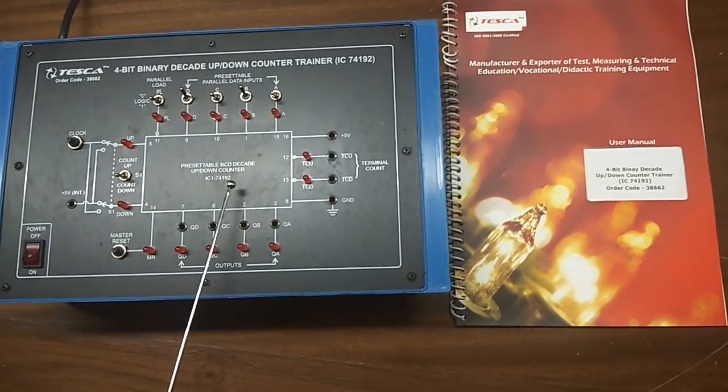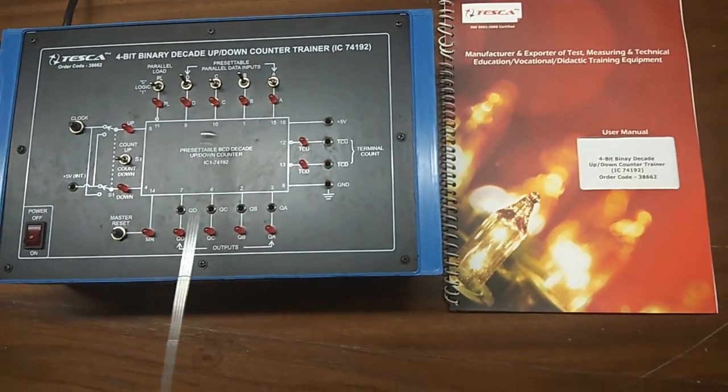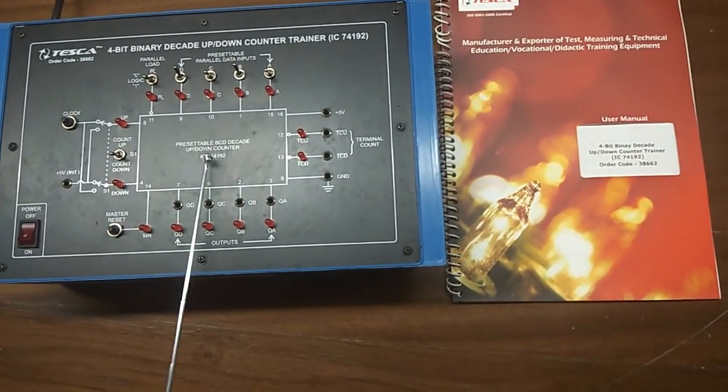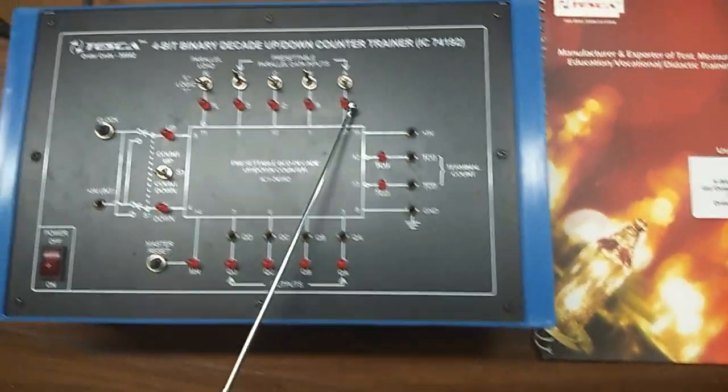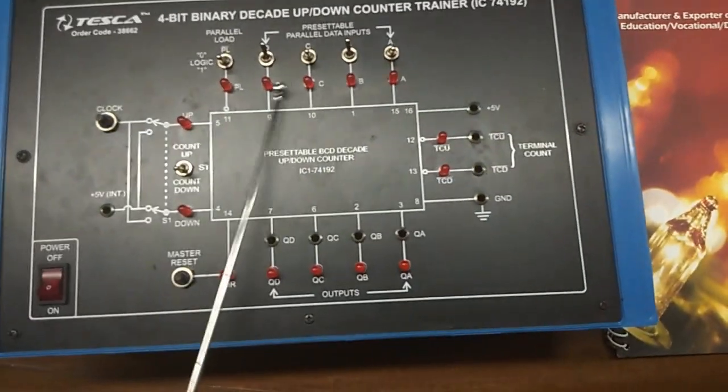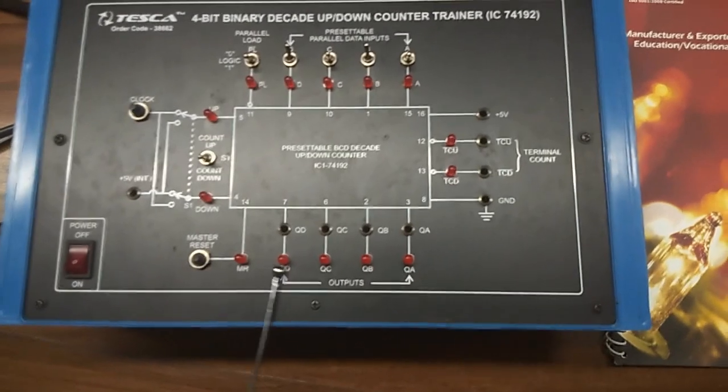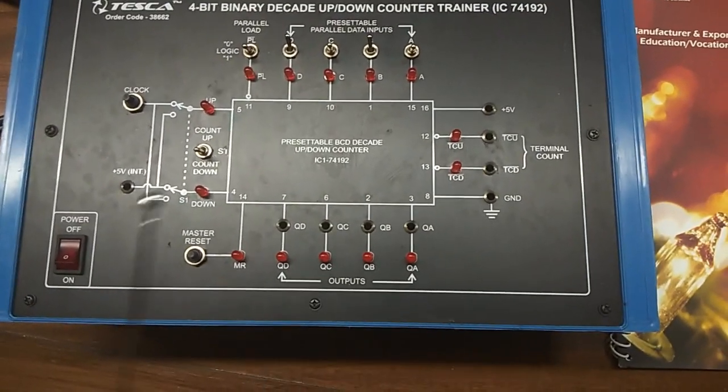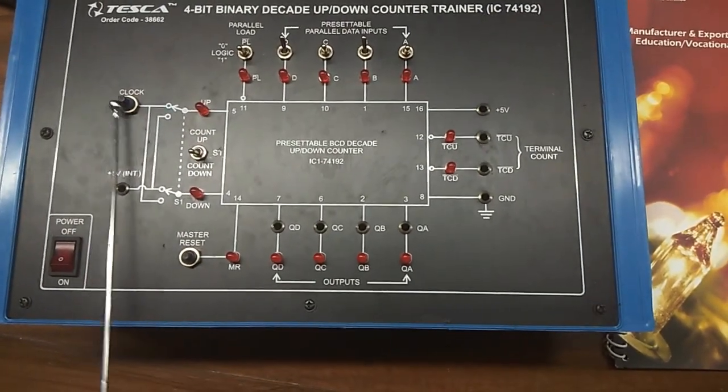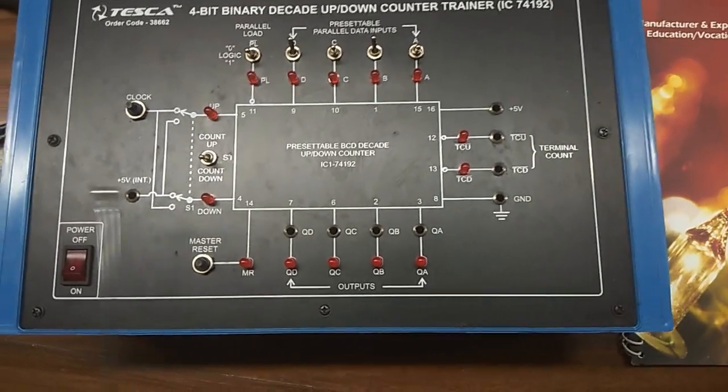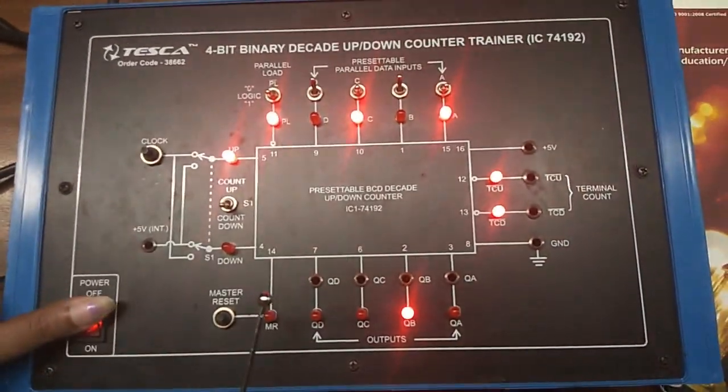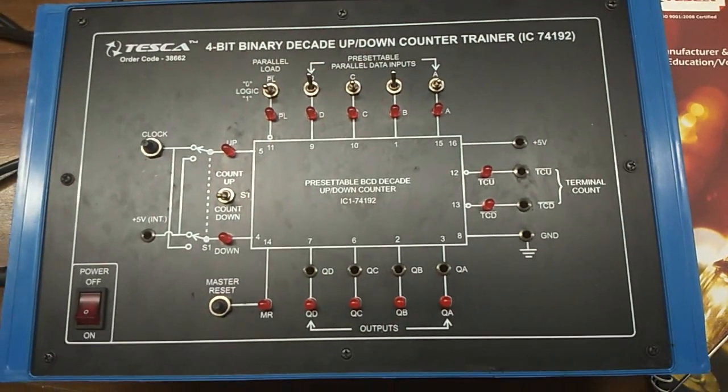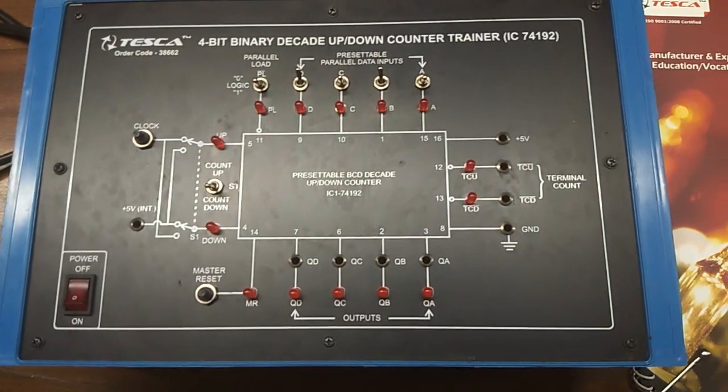This is IC 74192. This is a presettable BCD decade up-down counter. This is the parallel data input and this is the output part. This is the clock switch to give pulses to the input and this is the main switch to turn on or off the kit. This is the user manual which is included with the kit.